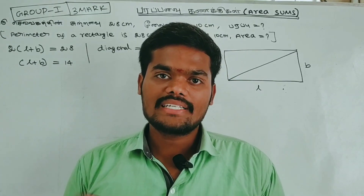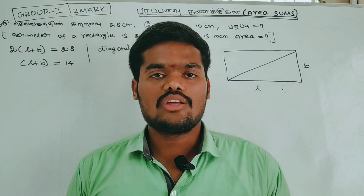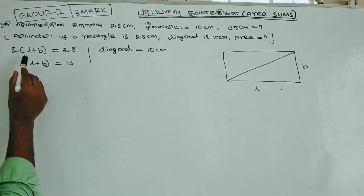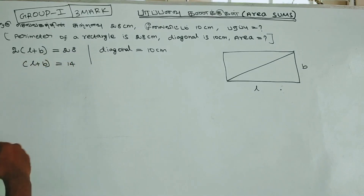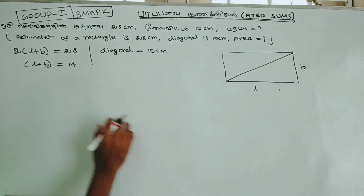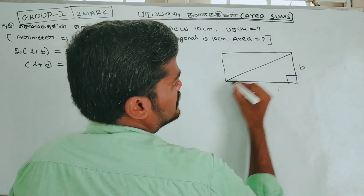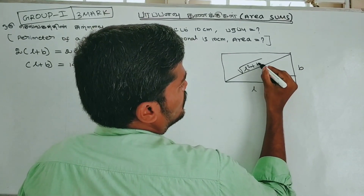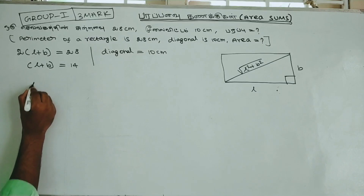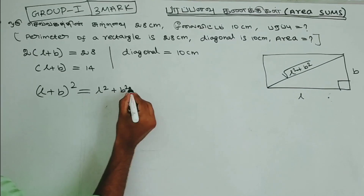Next question: for a rectangle, the perimeter is 28 cm and the diagonal is 10 cm. The perimeter is 2(L + B) = 28, so L + B = 14. The diagonal formula is √(L² + B²) = 10. We apply the identity: (L + B)² = L² + B² + 2LB.